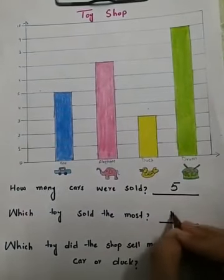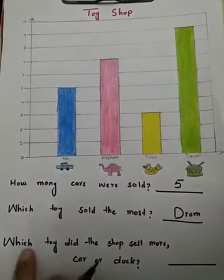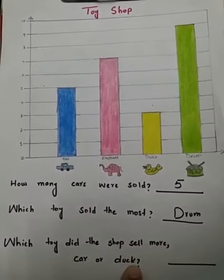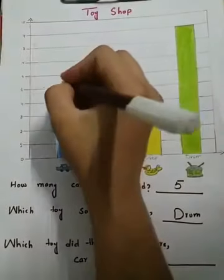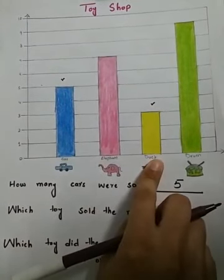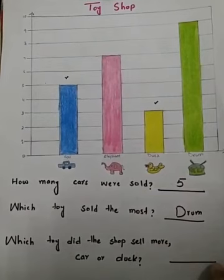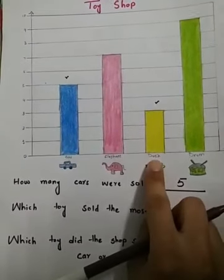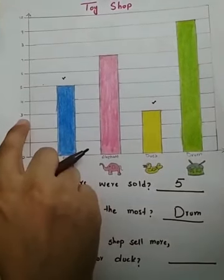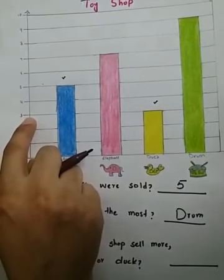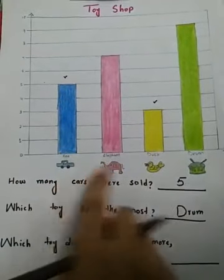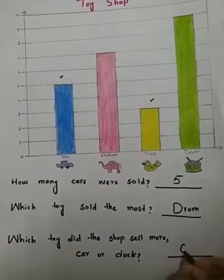Which means drum sold the most. Which toy did the shop sell more — car or duck? We have to compare car and duck. The duck had only three sold, and five cars were sold. It means more cars were sold than the duck. The car is the answer.